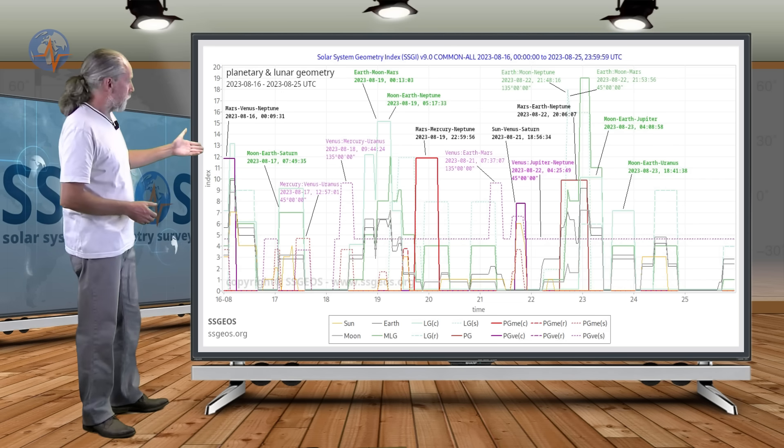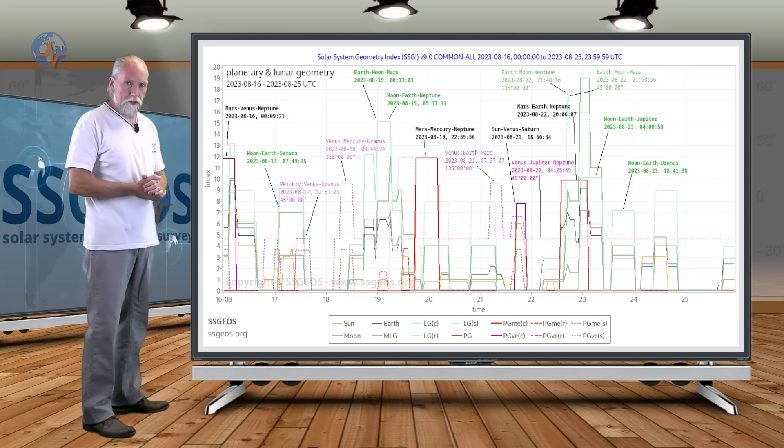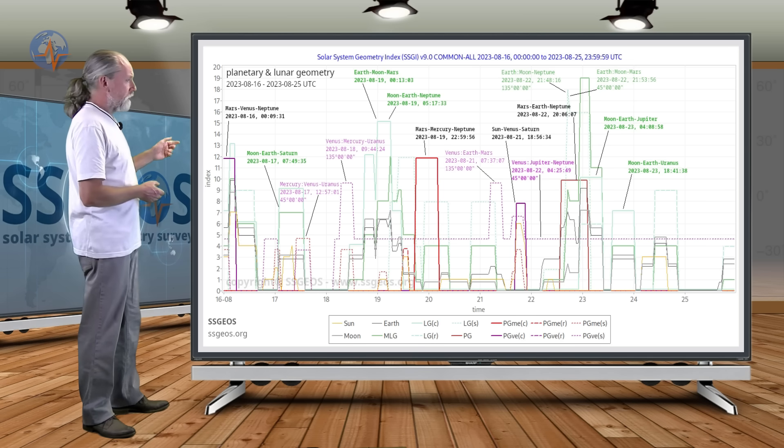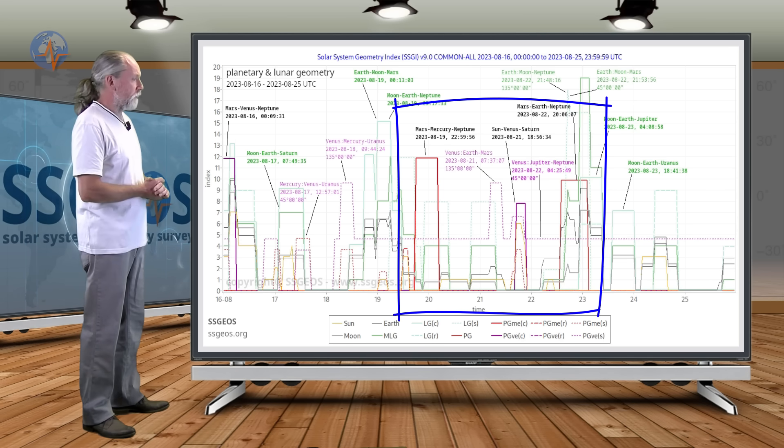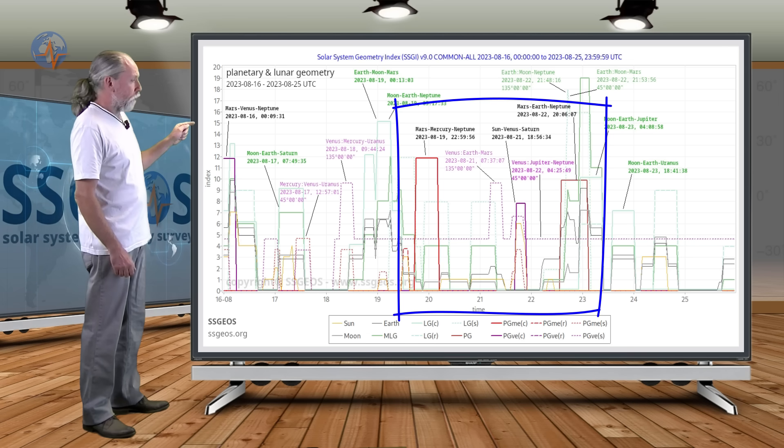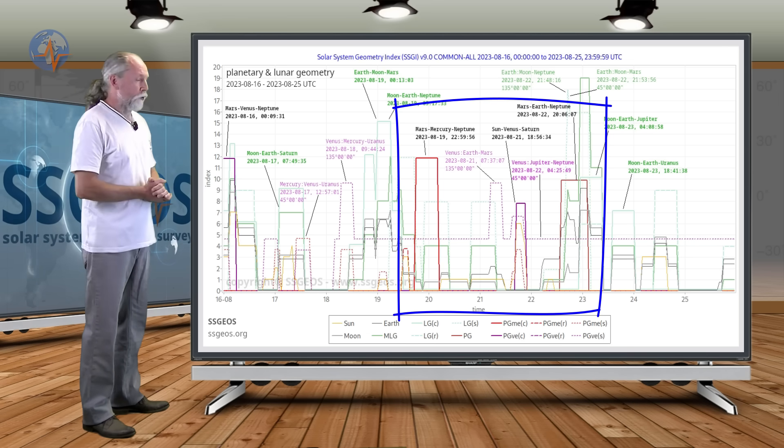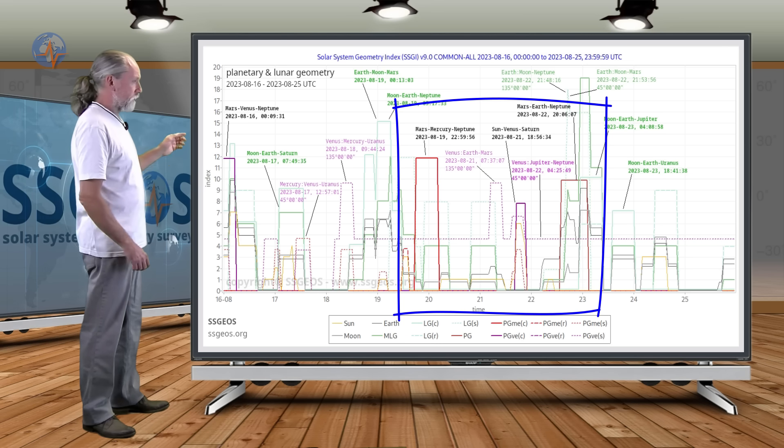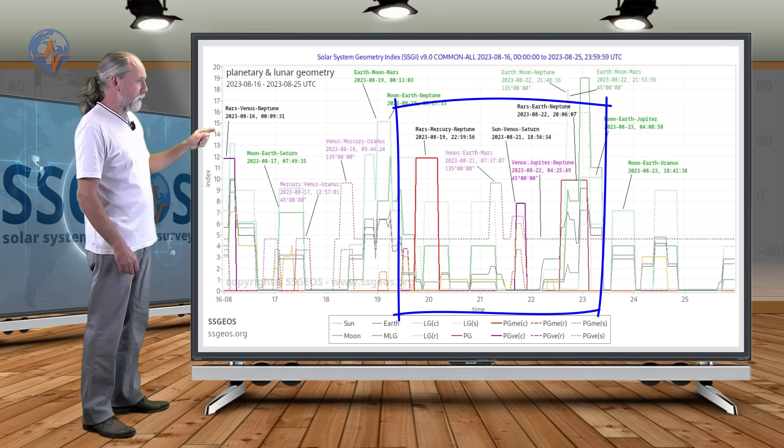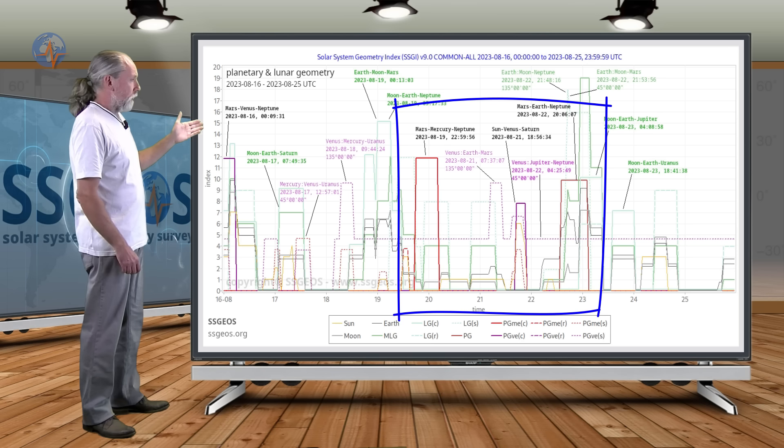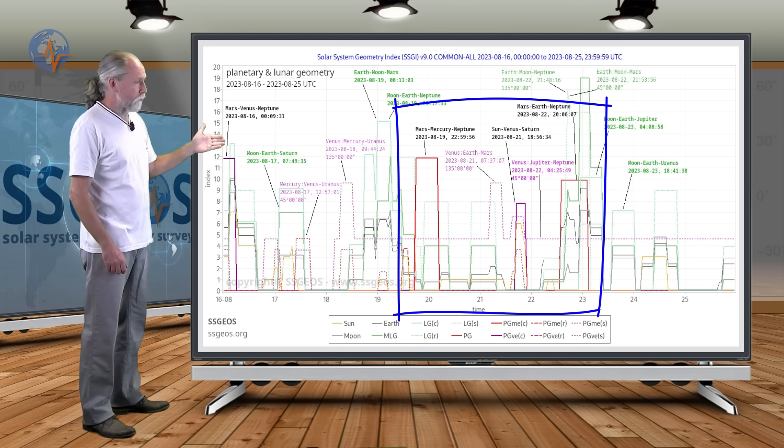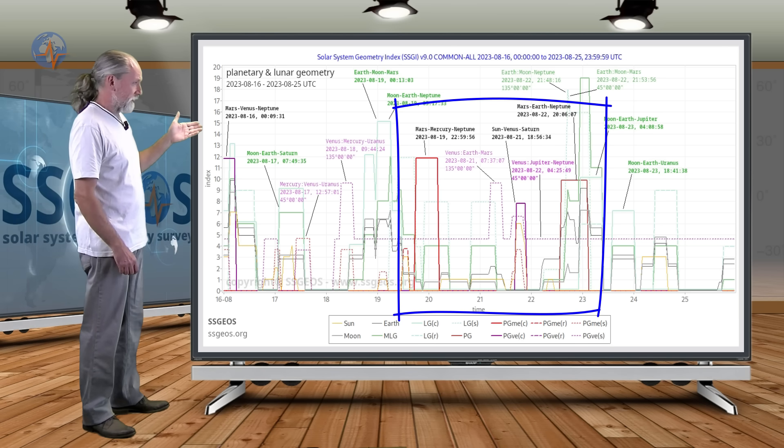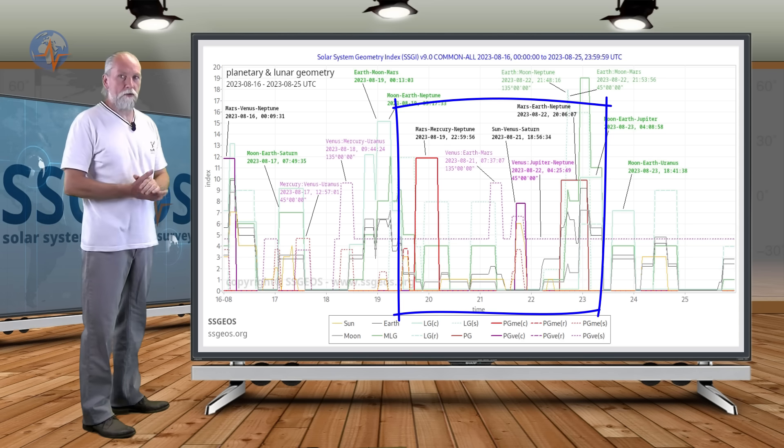So, let's have a look at the planetary and lunar geometry in the coming week. We see a couple of planetary conjunctions. The peaks that will be on the 19th, 20th, Mars-Mercury-Neptune. And then Sun-Venus-Saturn on the 21st. And also we have Mars-Earth-Neptune on the 22nd. These are the three planetary conjunctions.